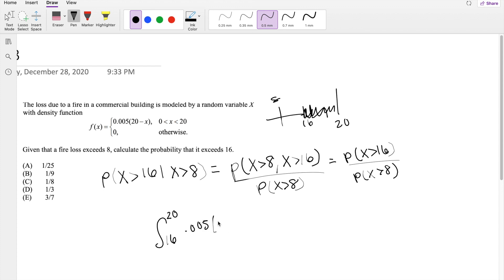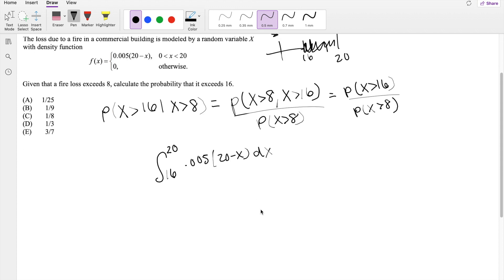Solving this thing out, 0.005, 20 minus x, dx. So solving this out, 0.005 is just a constant, so I'm just going to throw that sucker out. And when I integrate with respect to x, 20 just becomes 20x, minus x just becomes x squared 1 half.